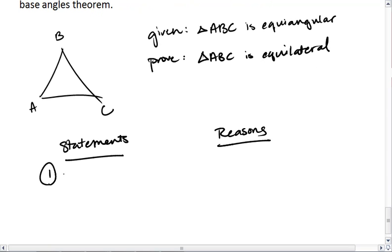Okay, first, I know that triangle ABC is equiangular, and that is given. I can also mark that in my picture.